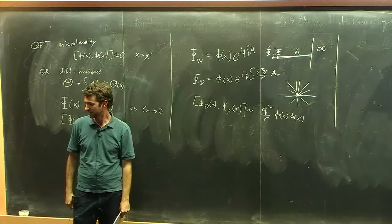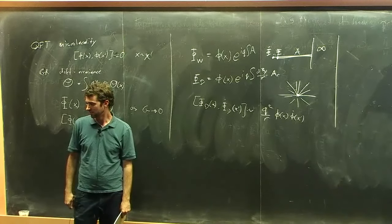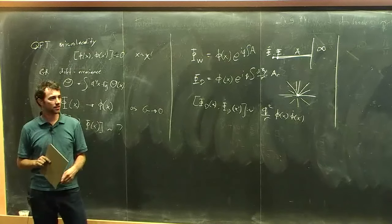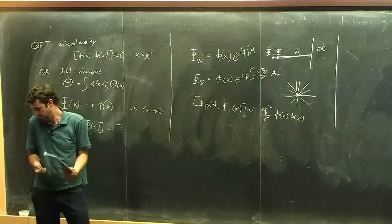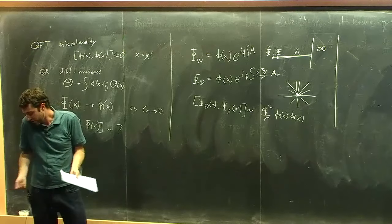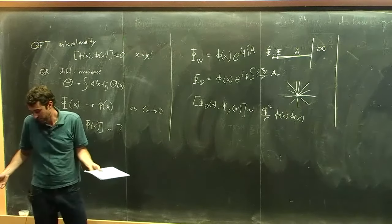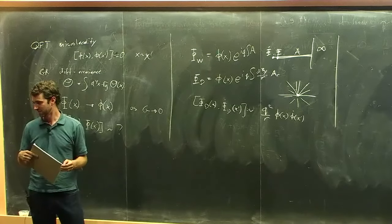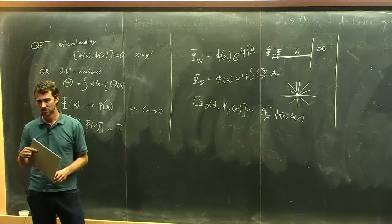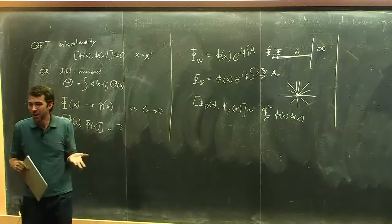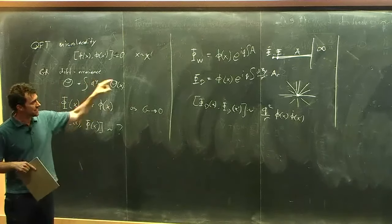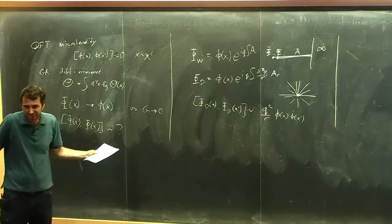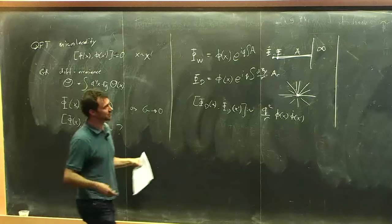There should be some modification: operators commute at space-like separation up to Gauss law constraints. The best statement depends on what operators you want to construct. The Dirac field is more local in the sense of being exactly zero in more places; when it's not zero, it has an IR-divergent singularity. One can also consider a positive and negative charge connected by a Wilson line, which is concentrated within a neighborhood and commutes with everything outside.